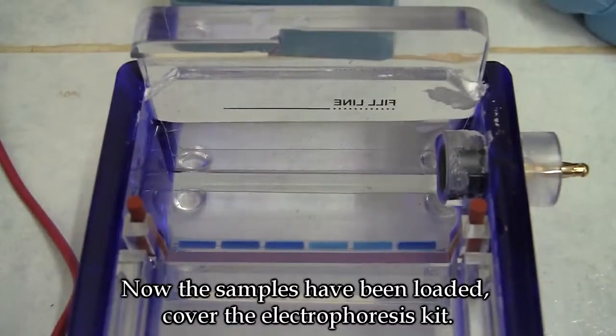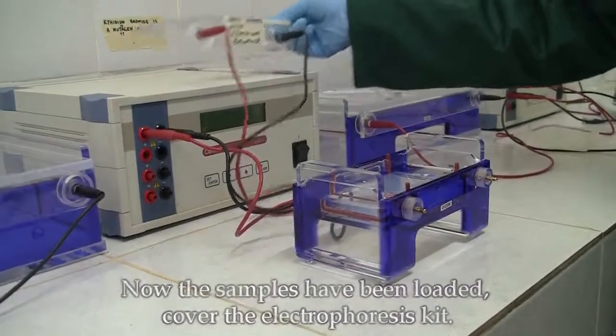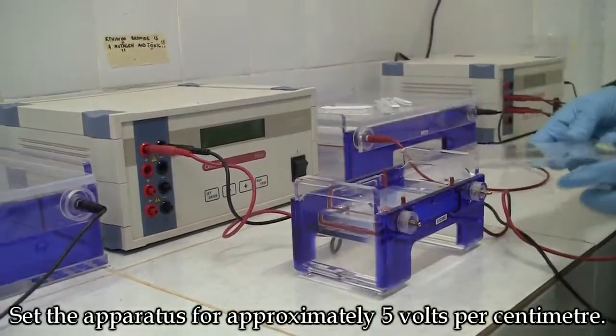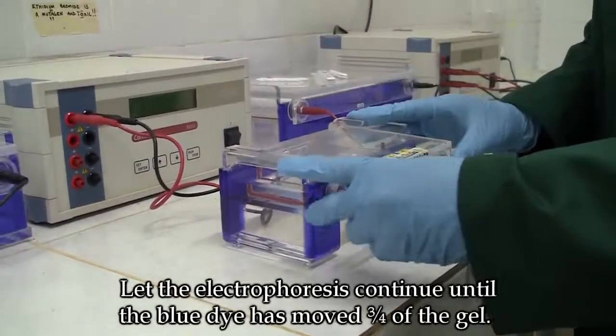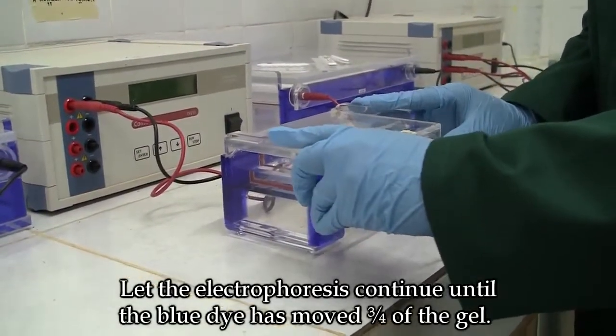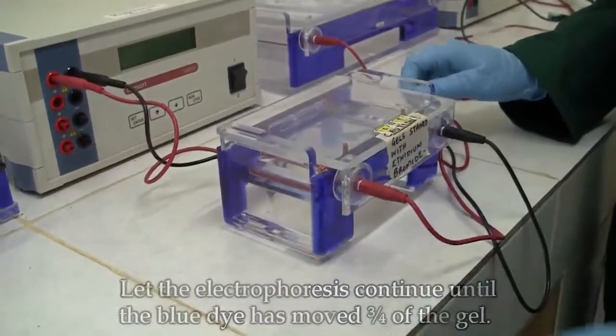Now the samples have been loaded. Cover the electrophoresis kit. Set the apparatus for approximately 5 volts per centimeter. Let the electrophoresis continue until the blue dye has moved three quarters of the gel.